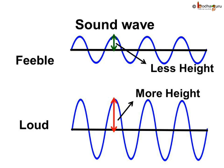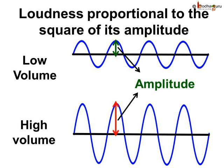The loudness of sound depends on its amplitude. When the amplitude of vibration is large, the sound produced is loud. When the amplitude is small, the sound produced is feeble. Actually, the loudness of sound is proportional to the square of its amplitude, although feelings of loudness are different from person to person.